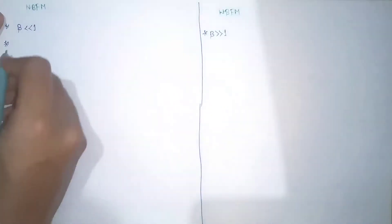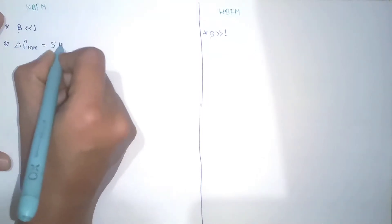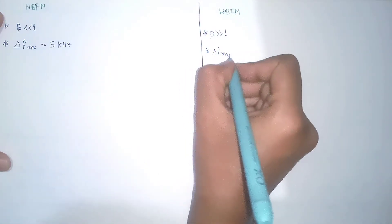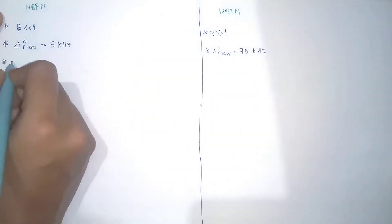So the next point we can write is delta f max equals 5 kilohertz, and in wideband FM the delta f max equals 75 kilohertz.